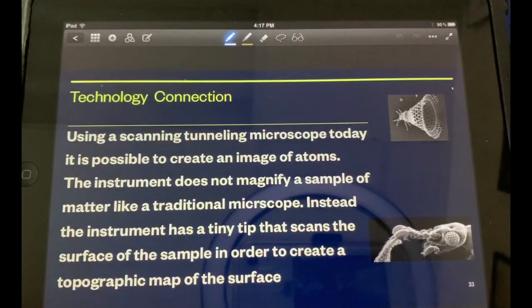So technology connection. Using a scanning tunneling microscope today it is possible to recreate an image of atoms. The instrument does not magnify a sample of matter like a traditional microscope. Instead the instrument has a tiny tip that scans the surface of the sample in order to create a topographical map of the surface.